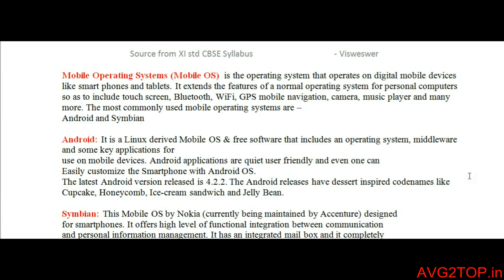Mobile operating system operates especially on digital mobile devices like smartphones and tablets. The basic features in a smartphone include touch screen, Bluetooth, Wi-Fi, GPRS, mobile navigation, camera, and music players, among other things seen in Android or Symbian mobiles.